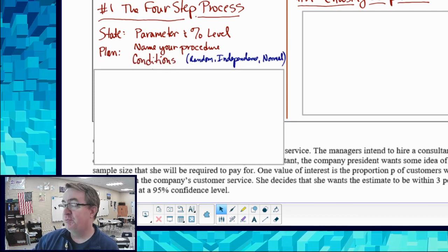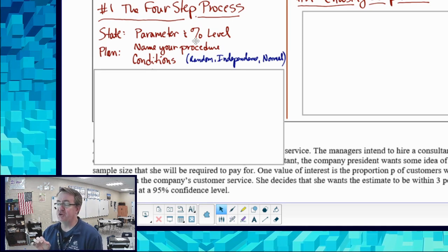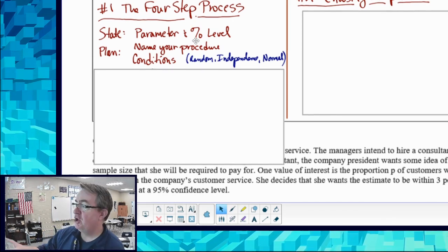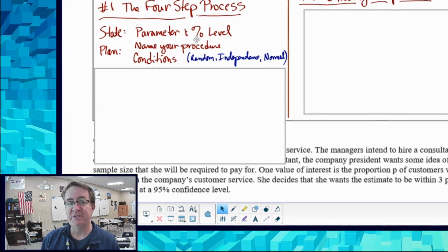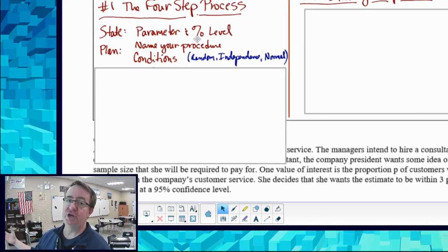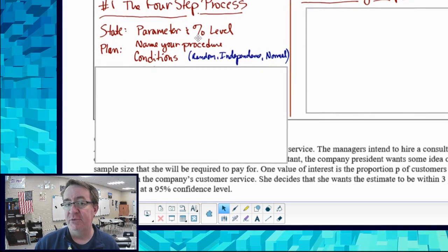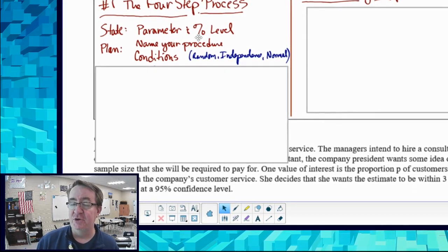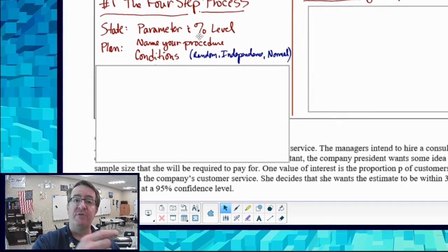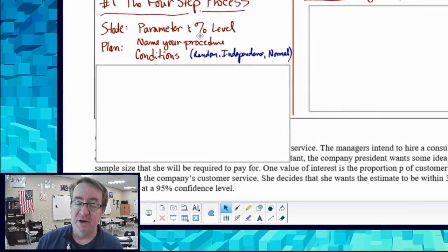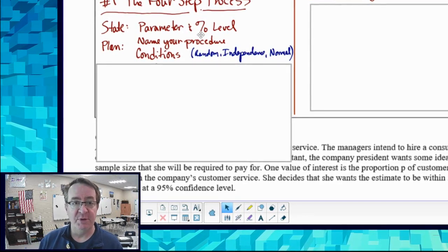We also need to plan what we're going to do. For planning, there's certain criteria that need to be met. You need to show that it's random so we can extend it to the general population. We need to know independence so we don't have to worry about replacing things. It also needs to be normal so we can use the z tables, the z formula, and things like that.